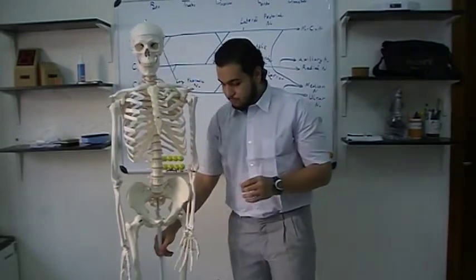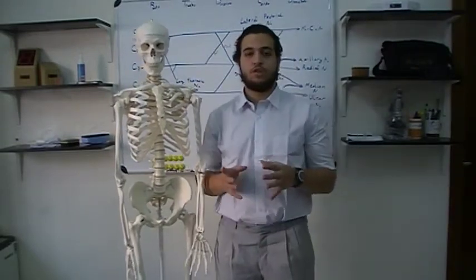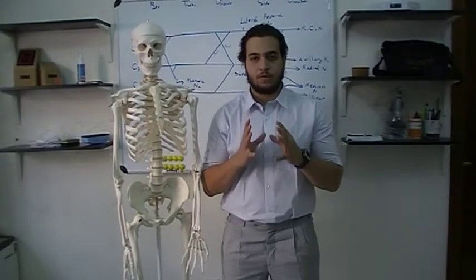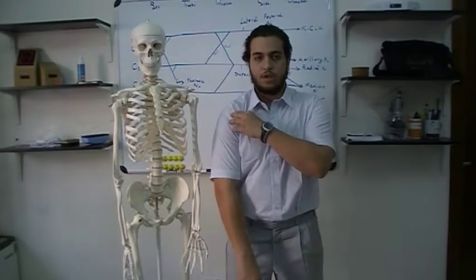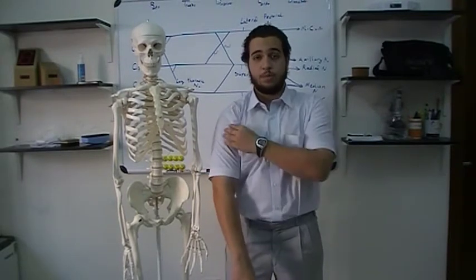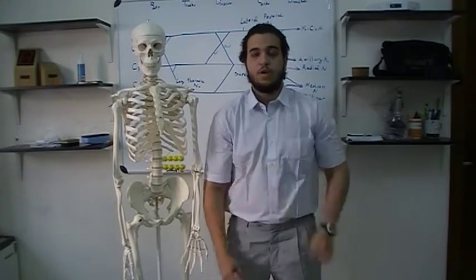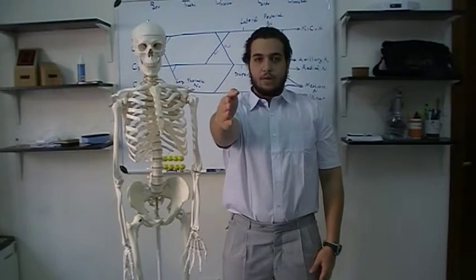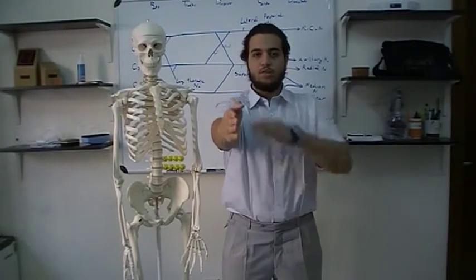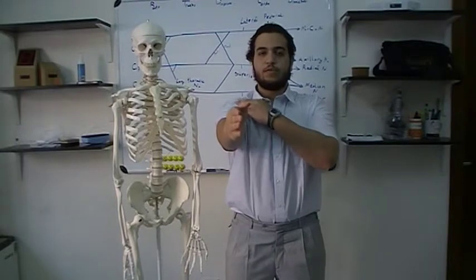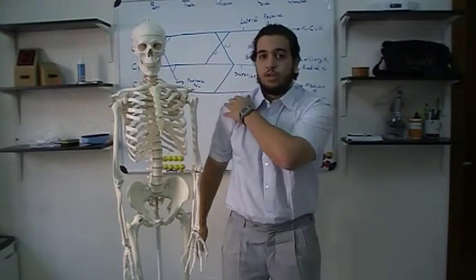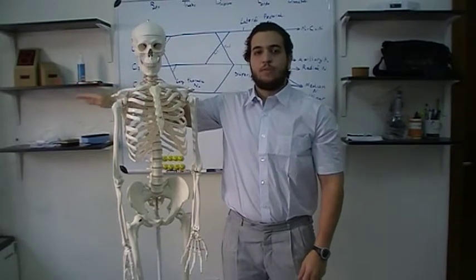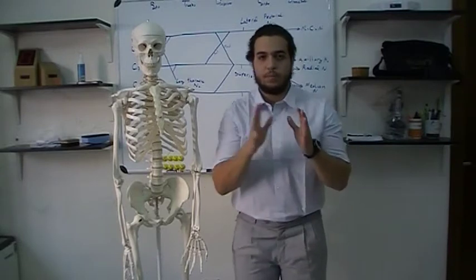The deltoid is supplied by the axillary nerve, and it has three parts which do three functions. The anterior part does flexion — when I do this movement, I'm flexing my arm. The posterior part does extension. And the middle part does abduction, which is a well-known movement. So that is all about the deltoid muscle.